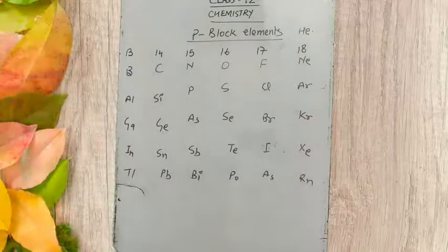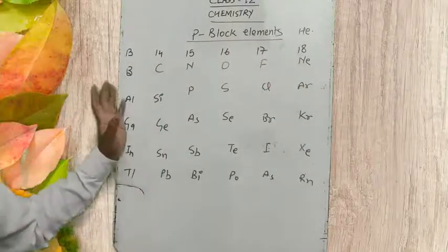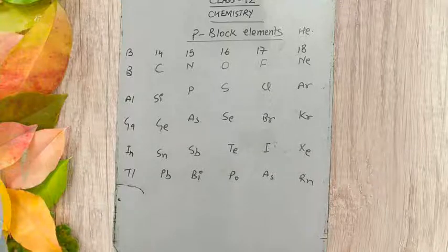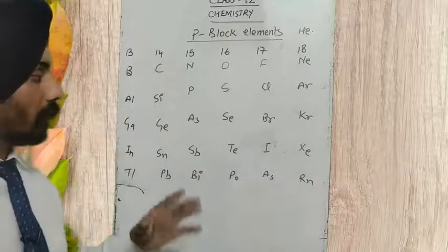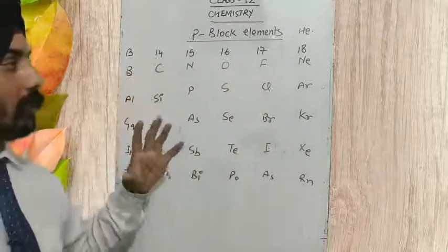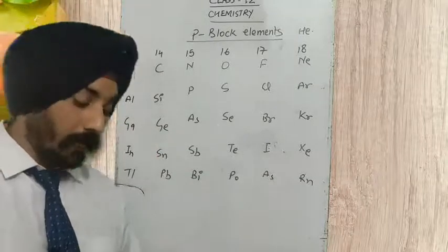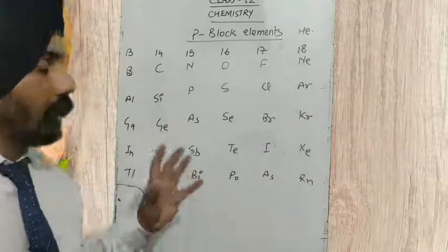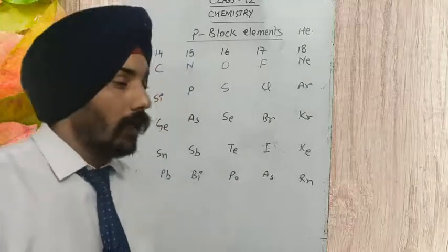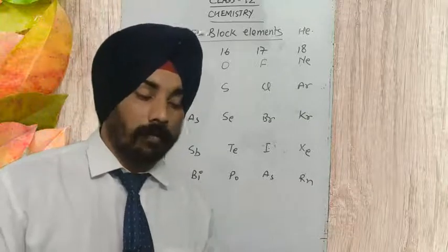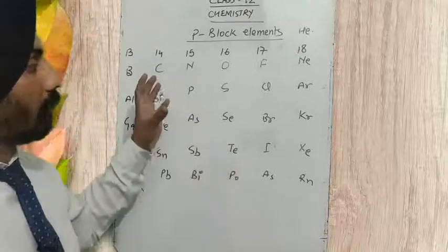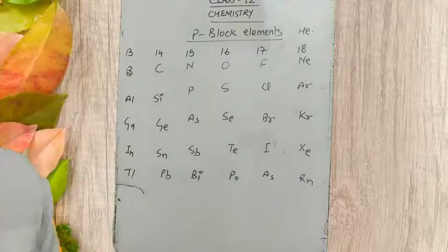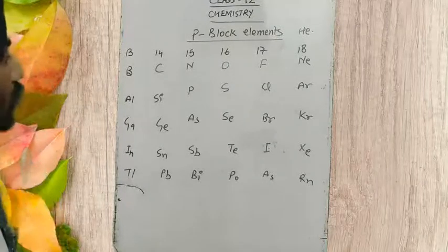So now we have all elements of group number 13 to 18. Out of these elements, how many are metal, how many are non-metal, and how many are metalloids? I am going to make a circle of metalloids first, because all three kinds of elements are present in the P block. That is why their chemistry is quite different from other elements.